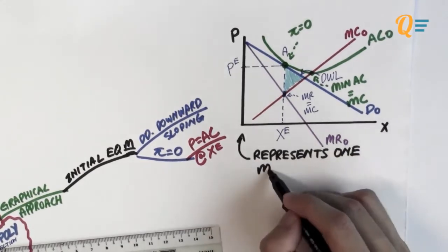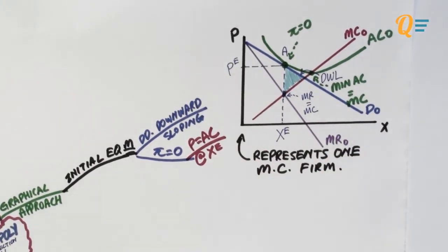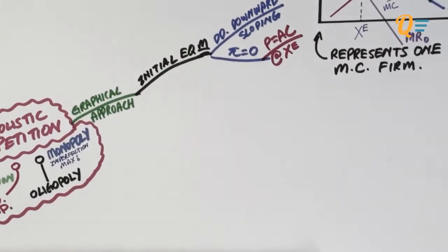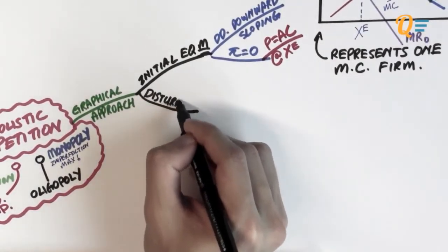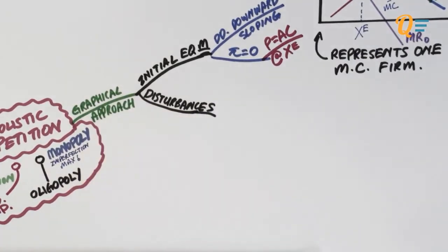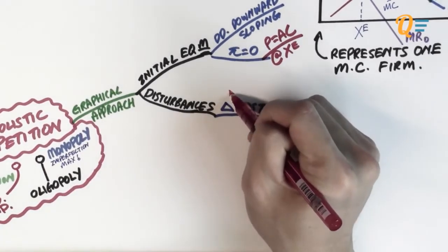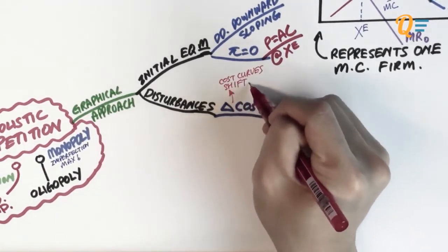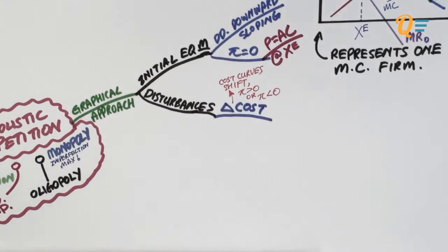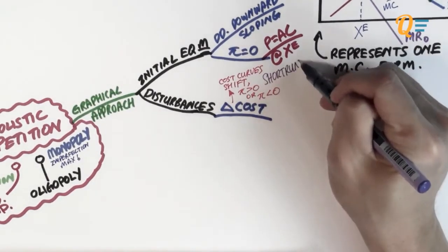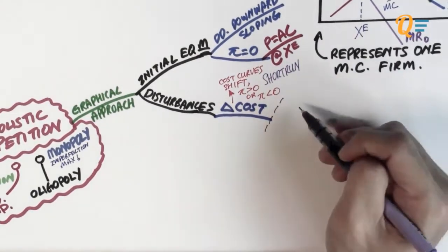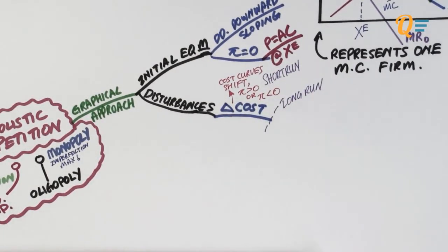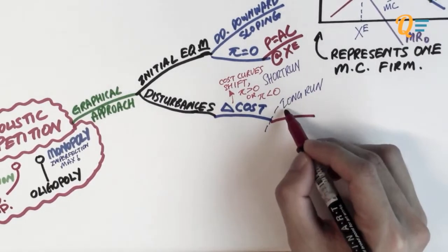This whole graph represents one monopolistic competitive firm. Now let's talk about disturbances that can happen. When there's a change in cost, some cost curves will shift. In the short run, depending on where the cost curve shifts, you might make positive or negative profits. In the long run, if there are positive profits, firms will enter because of the few barriers to entry.